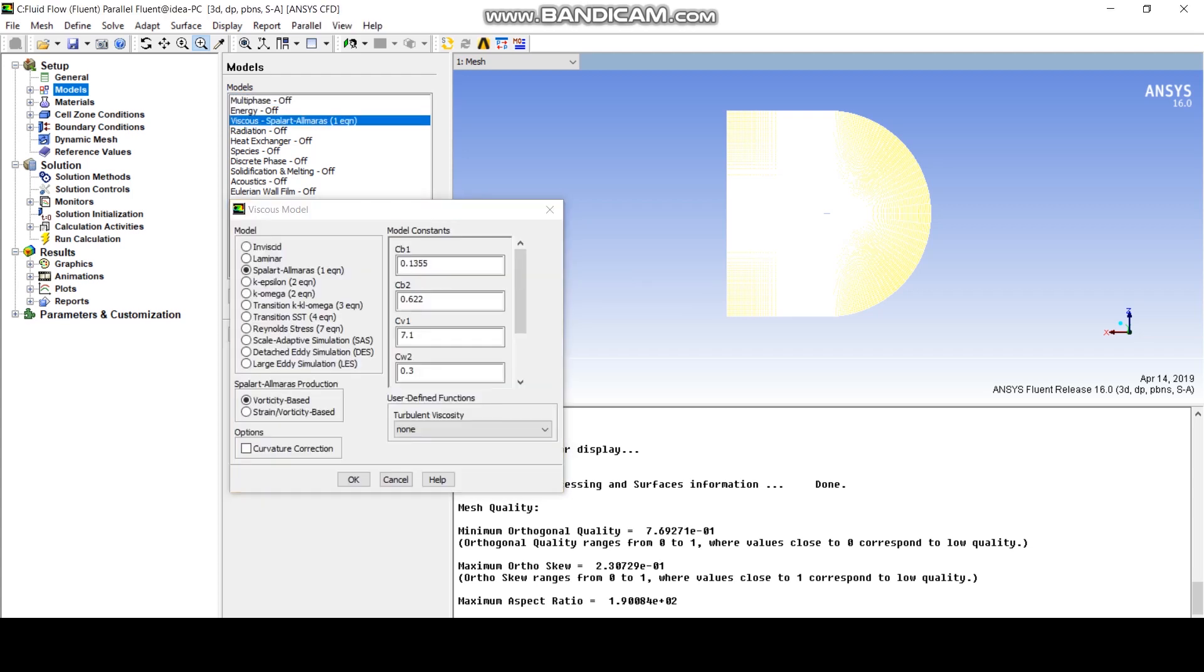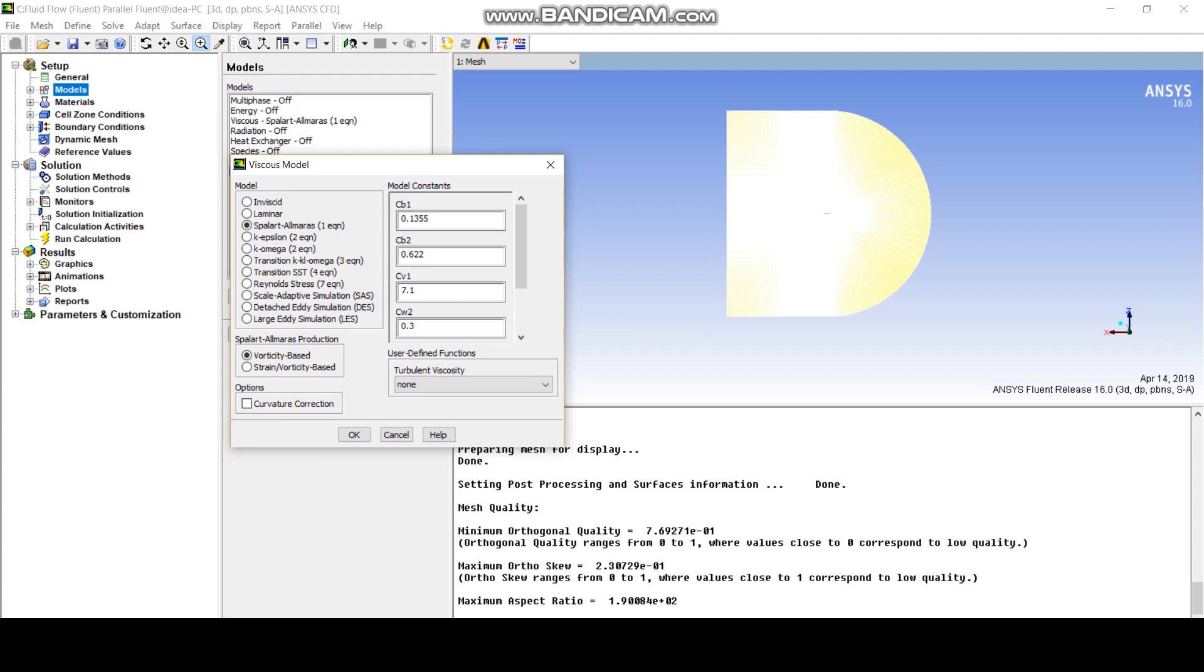The next step is to choose the model. So the turbulence model is one of the most important parameters in your CFD simulation. And as we said, we are going to be using the Spalart-Allmaras equation. There are different options you can choose for which work for different situations.